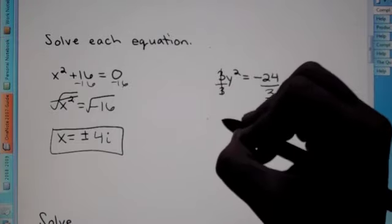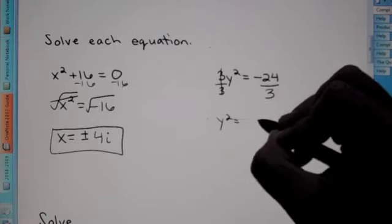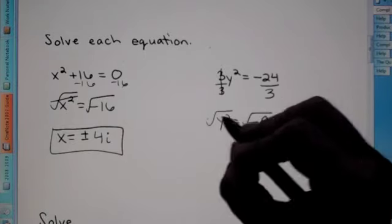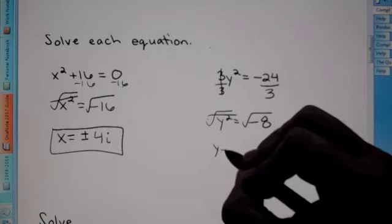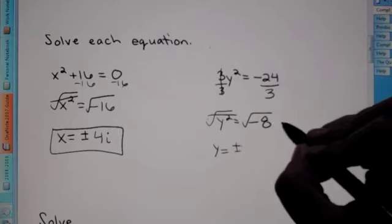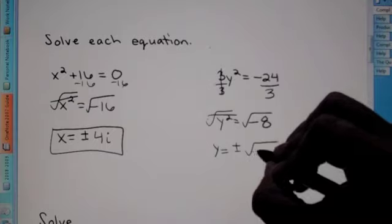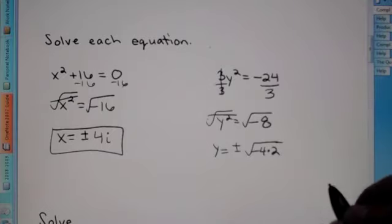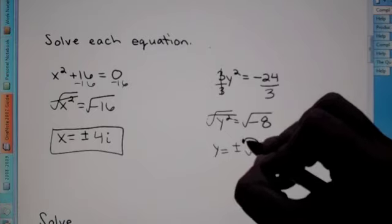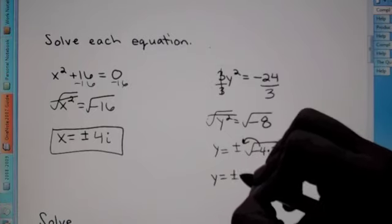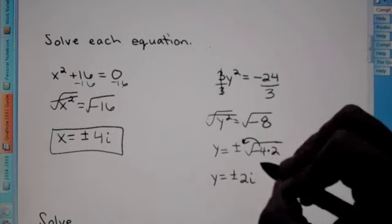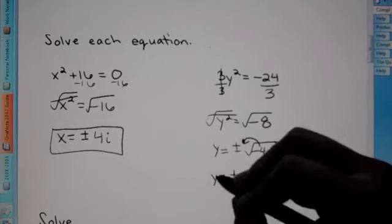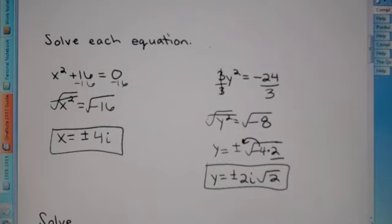On the next one, we divide by 3 to get y squared is equal to negative 8. We take the square root so those cancel out. y is equal to plus or minus the square root of negative 8. We can break down 8 to be negative 4 times 2, because we want to simplify as much as we can. When you take the negative 4 out it becomes 2i — square root of 4 is 2, the negative comes out to make i — and you're left with root 2 underneath. That's your final answer.